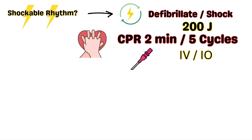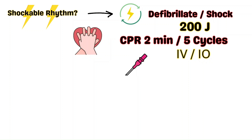CPR is essential for maintaining cerebral and coronary perfusion. At this point, if it's not already in place, obtain IV or IO access. After the two minutes are up, perform a pulse and rhythm check.